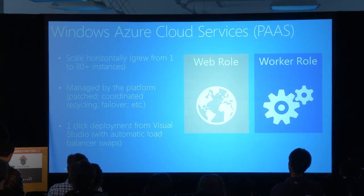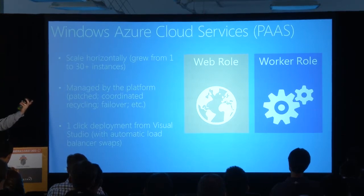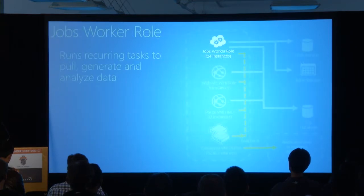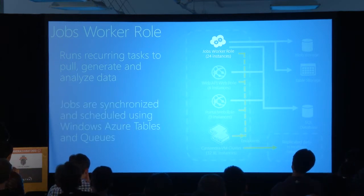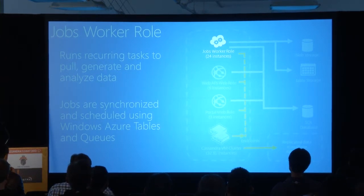One important thing is that you have to make sure your architecture is ready to support stateless machines, meaning that you externalize your data somewhere else — in this case to Cassandra and to other storage services like Azure storage and SQL Azure. The jobs worker role takes care of recurring tasks. It's based on Azure tables and queues as well for messaging, so we don't have to worry about provisioning machines for these services. We create an endpoint or a connection and we start using that for the jobs worker role.